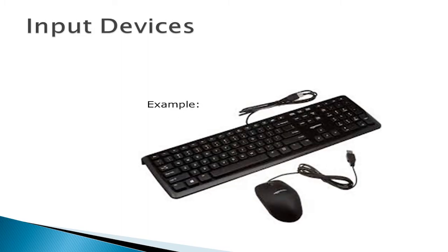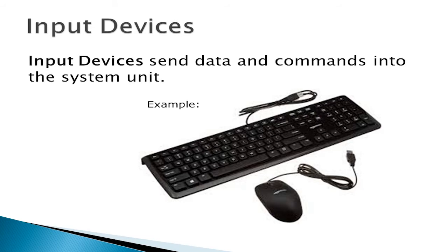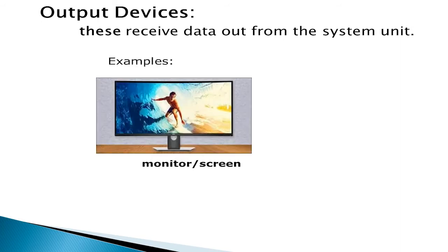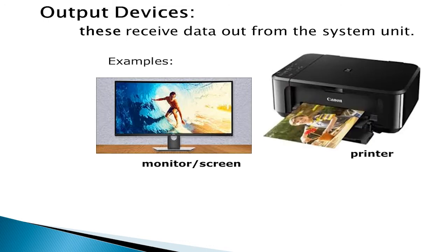Let us now look at the input devices and their functions. Keyboard and mouse — these send data and commands into the system unit. Let us turn our attention to the output devices. The monitor gives a visual display of output, whereas the printer gives a hard copy of output.